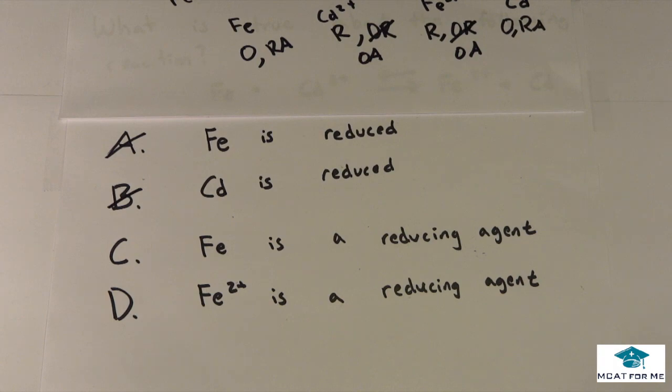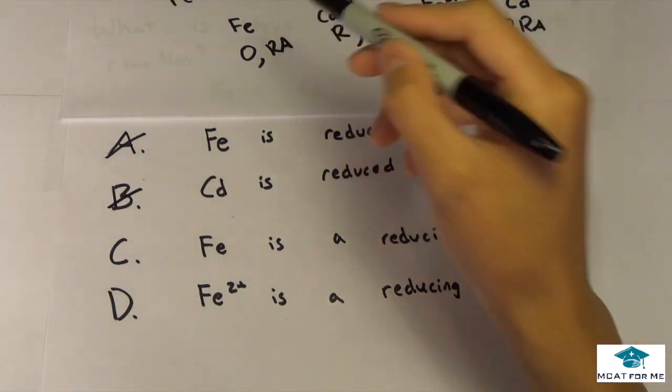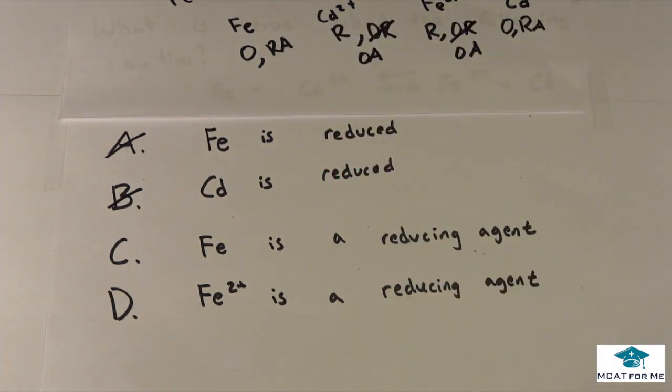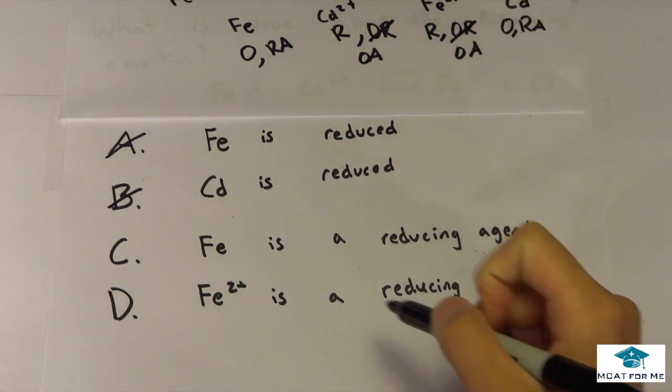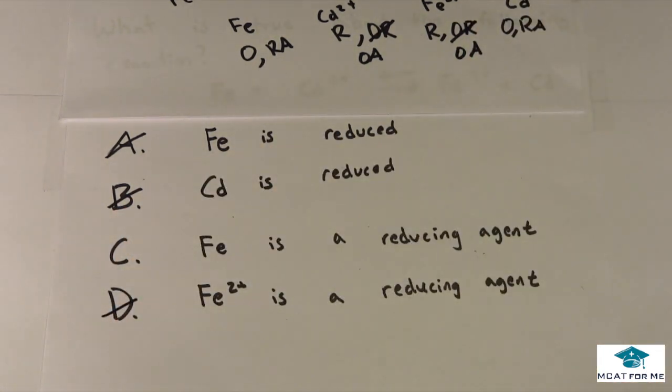Fe is a reducing agent, so if we look here, reducing agent, oh wait that checks out, let's check the last one though just to be sure. And Fe two plus is an oxidizing agent, but here it says reducing agent, so we know our answer should be C.